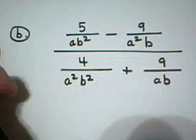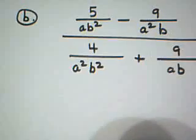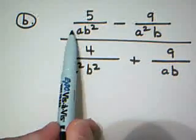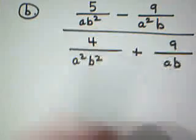Now, this complex fraction, which is example 12 part B, looks ugly. But again, remember, let's look at all of the denominators. Okay, so there are four of them here. And we can see that the LCD is A squared B squared.